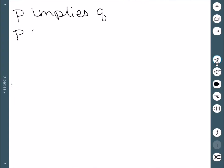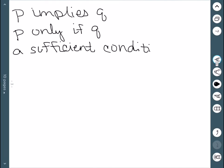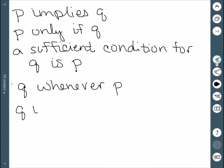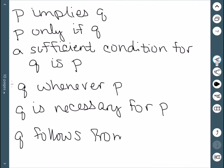We have a few more: P implies Q. P only if Q. A sufficient condition for Q is P. Q whenever P. Q is necessary for P. And finally, Q follows from P.